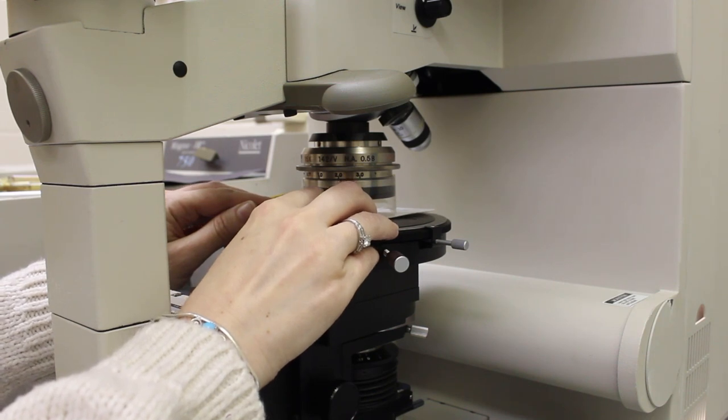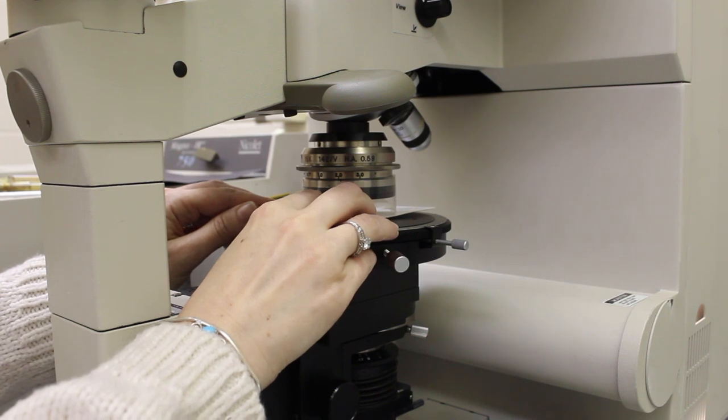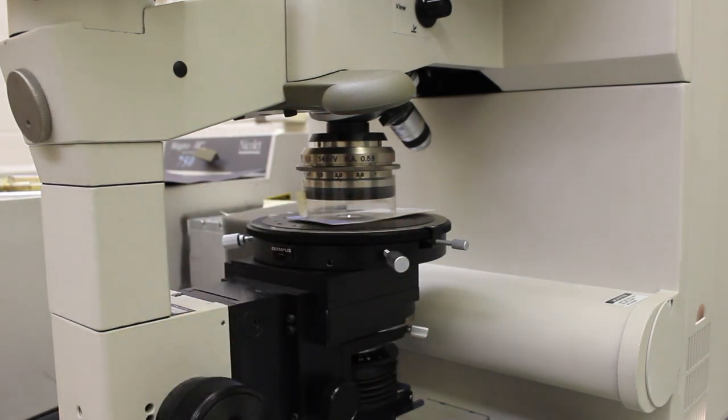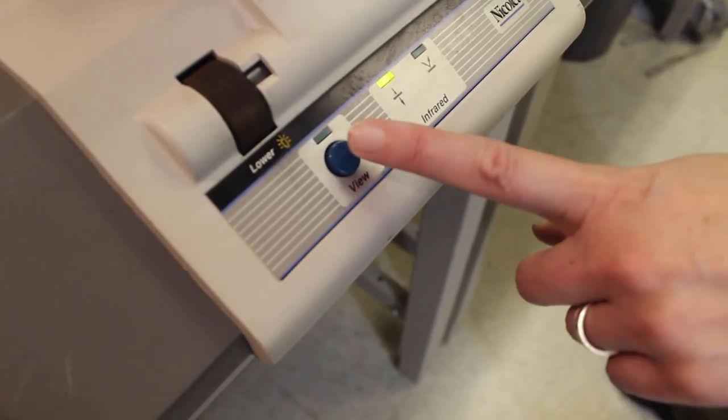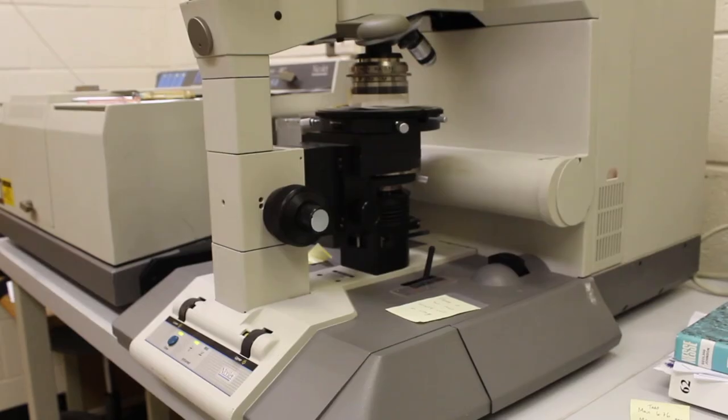There are controls at the bottom of the microscope that you can use to turn on the optical light so you can see your sample and focus on it. There's a little button to view the samples and then there are two sliders that turn the visible lights on and off.